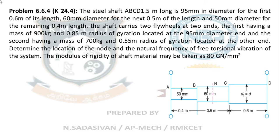Determine the location of the node and the natural frequency of free torsional vibration of the system. The modulus of rigidity of the shaft material is 80 giga Newton per meter square.